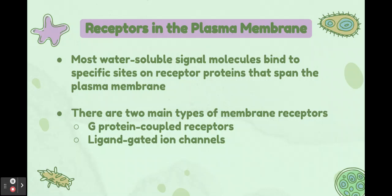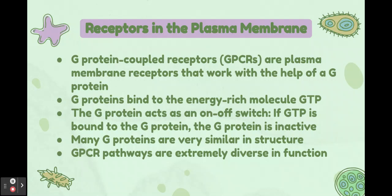Most water-soluble signal molecules bind to specific sites on receptor proteins that span the plasma membrane. There are two main types of membrane receptors: G-protein coupled receptors (GPCRs) and ligand-gated ion channels. GPCRs are plasma membrane receptors that work with the help of a G-protein, which binds the energy-rich molecule GTP. When GTP is bound to the G-protein, the G-protein becomes active; GDP binding turns it off.